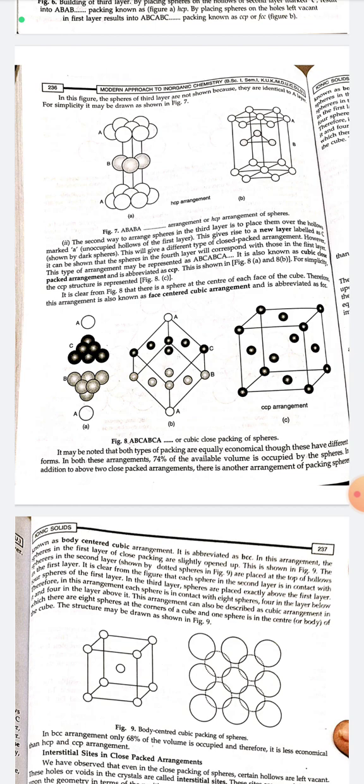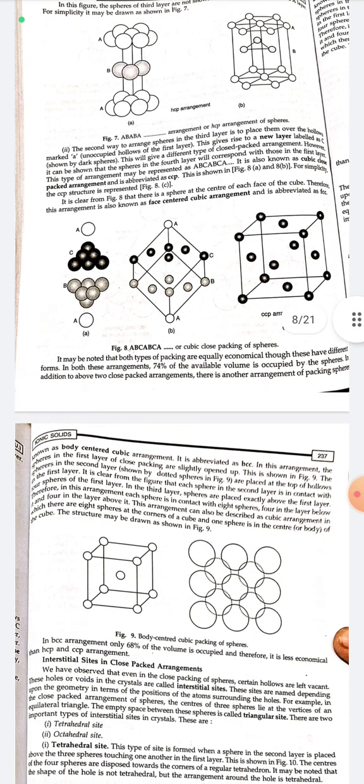The second way to arrange spheres in the third layer is to place them over hollows marked C — the unoccupied hollows of the first layer — giving rise to a new layer labeled C. In this case the spheres in the fourth layer correspond with those in the first layer. This arrangement is represented as A B C A B C A and is known as cubic close packing, abbreviated as CCP, shown in figures 8a and 8b.